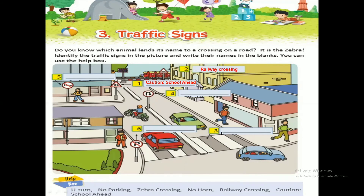Come to question number three — you can see white strips on the road, which we call zebra crossing. This is for pedestrians so they can easily cross the road. Question four shows a sign shaped like the alphabet U, which we call U-turn. It means from here you have to take the U-turn — you are not allowed to go further.